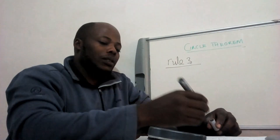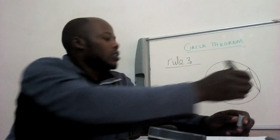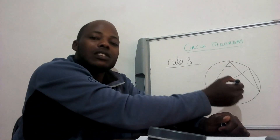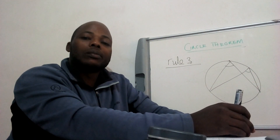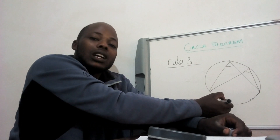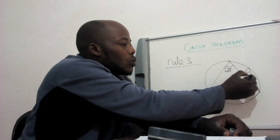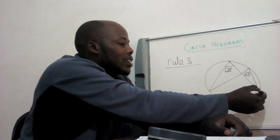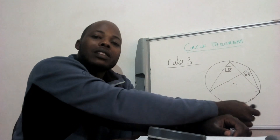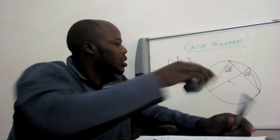Property number three — don't confuse this with rule number one. Rule number three says the angle at this point and this other point are equal, because they are coming from the same arc. If this is 20 degrees, this one is also 20 degrees. Remember rule number one had the angle at the center being twice the one at the circumference, but this time both angles are at the circumference.